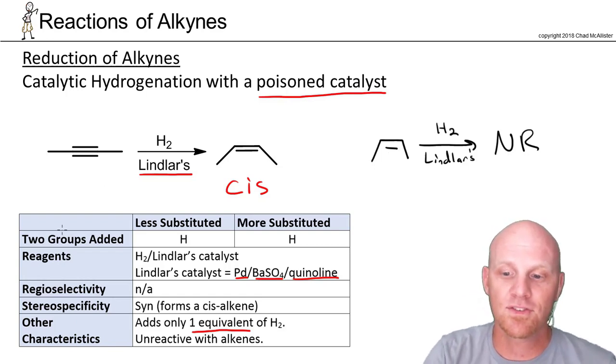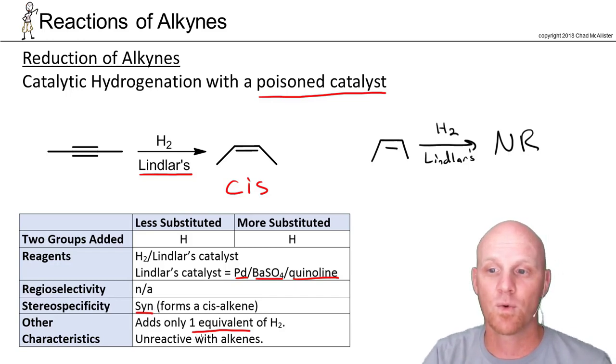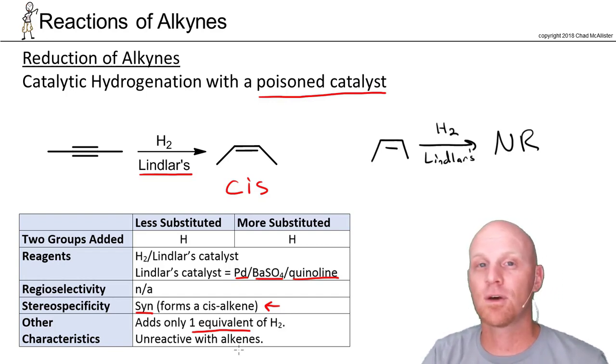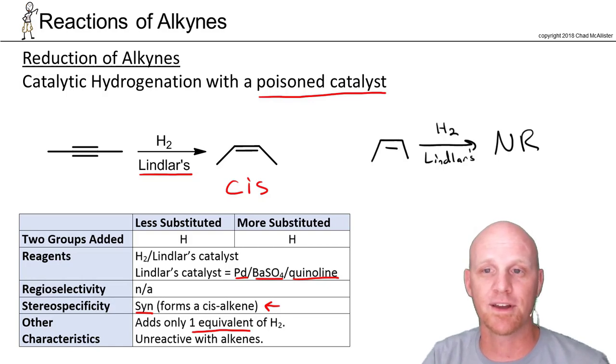Once again, this is a syn addition, so mechanistically it's very similar to what we saw with our normal catalyst, and that's why it forms the cis alkene. We have a way to form the trans alkene as well, so this is really important from a synthesis perspective. If I can form cis versus trans, that's something your professor is very likely to make sure you know the difference between forming a cis alkene or a trans alkene from your corresponding alkyne.